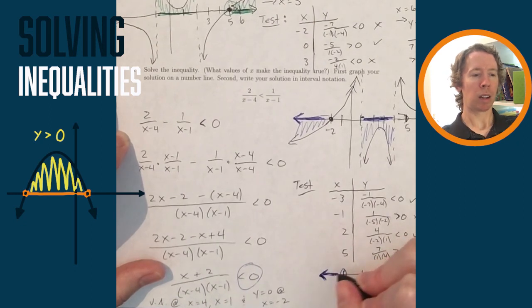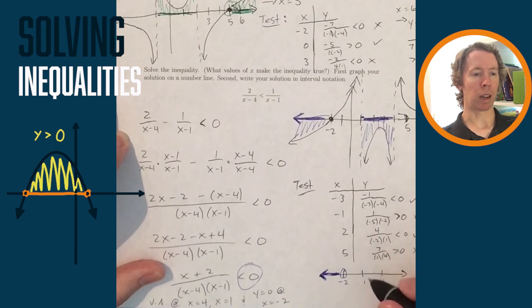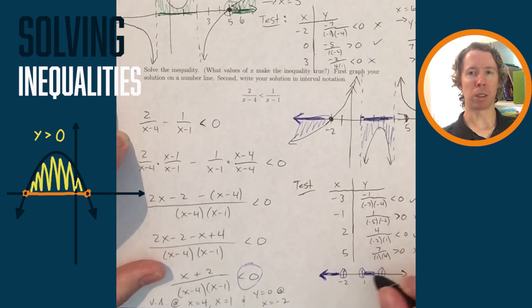And then the last thing that I'll need to do is write this in interval notation. I've got two pieces, so I join those two pieces with a union sign, the little u symbol. So negative infinity to negative 2 with parentheses union 1 to 4.